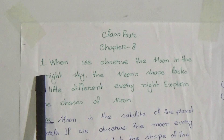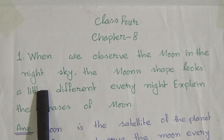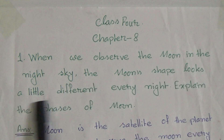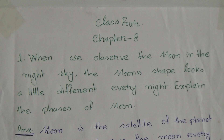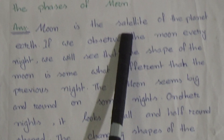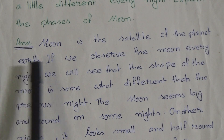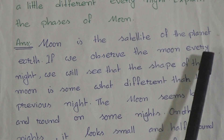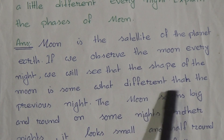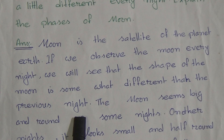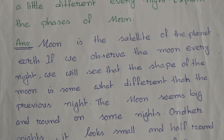Chapter 8, question number 1: When we observe the moon in the night sky, the moon's shape looks a little different every night. Explain the phases of the moon. Answer: The moon is the satellite of the planet Earth. If we observe the moon every night, we will see that the shape of the moon is somewhat different than the previous night. The moon seems big and round on some nights; other nights it looks small and half round shaped.